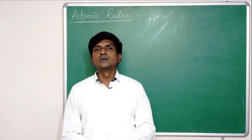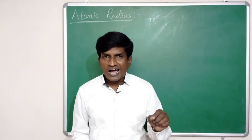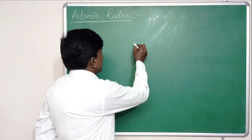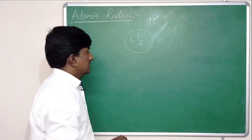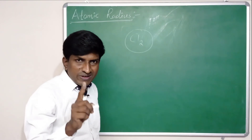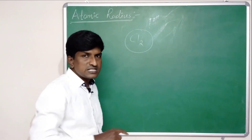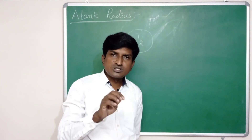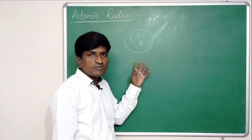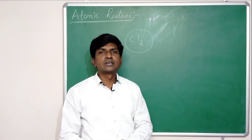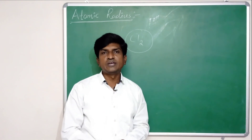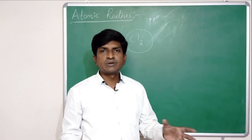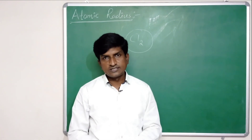For example, when two chlorine atoms come close to each other they share one pair of electrons and form a covalent bond, forming chlorine gas. The distance between the nuclei of these two chlorine atoms is first measured, and half of that distance is said to be the atomic radius of chlorine. This radius is called the covalent radius.